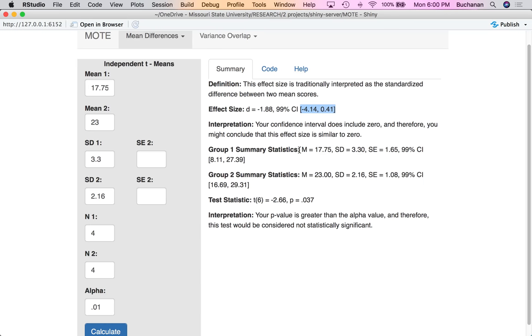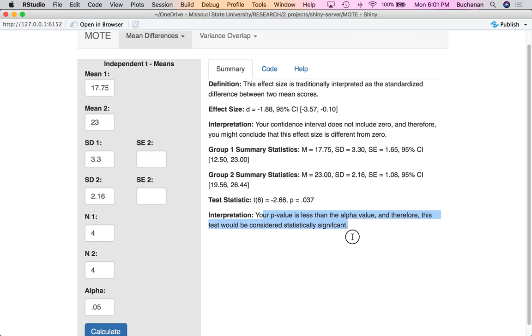We're also going to give you the summary statistics, so the mean, standard deviation, standard error, and the confidence interval for that mean only for each statistic so that you could report those in APA style. And then the test statistic. So we're actually going to calculate t for you as well. So t with six degrees of freedom is 2.66. Our p-value is 0.04. And in this particular case, p is greater than alpha because 0.04 is greater than 0.01. And so we would say this was not significant. That interpretation will change if we change alpha, which would be cheating, but it will change. And all the confidence intervals will change as well. But now if p is less than alpha, we'll get the interpretation that it would be significant.